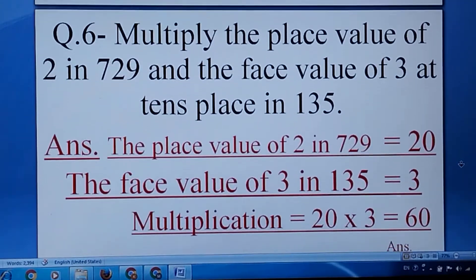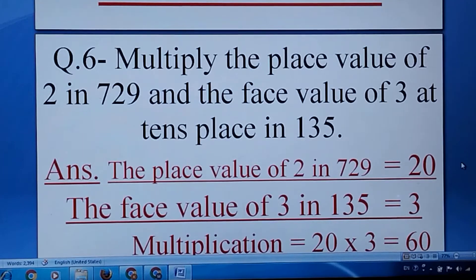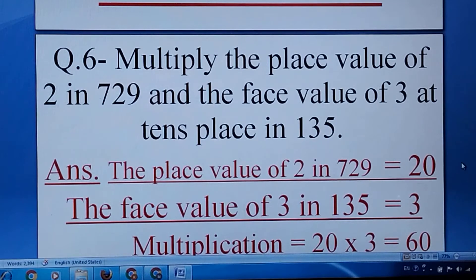Question number six: multiply the place value of 2 in 729 and the face value of 3 at tens place in 135. First, the place value of 2 in 729 is equal to 20. The face value of 3 in 135 is equal to 3. Then you have to go for multiplication.